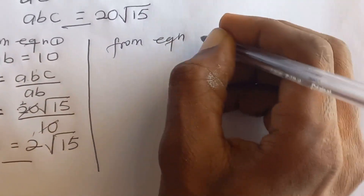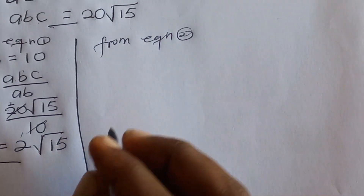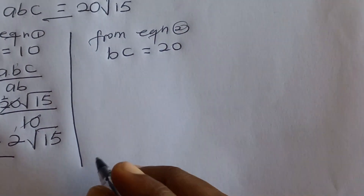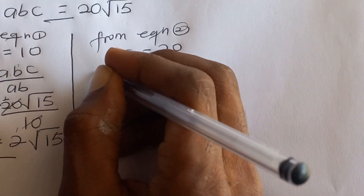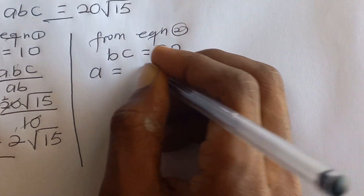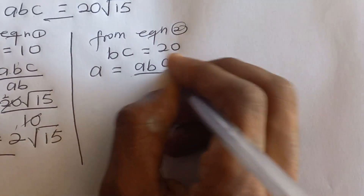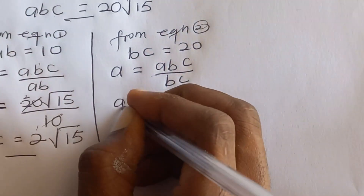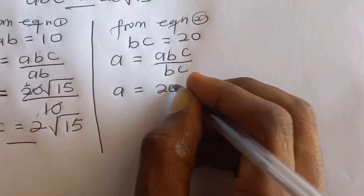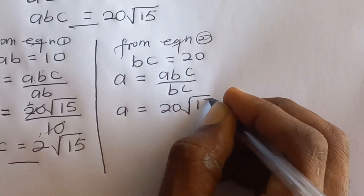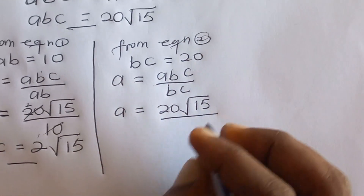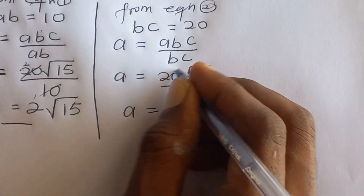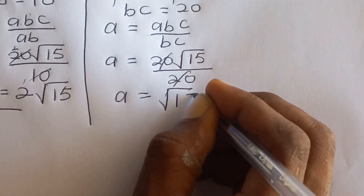From equation 2, which is bc equals 20, we can find a. We say a equals abc divided by bc, so a equals 20√15 divided by 20, giving us a equals √15.